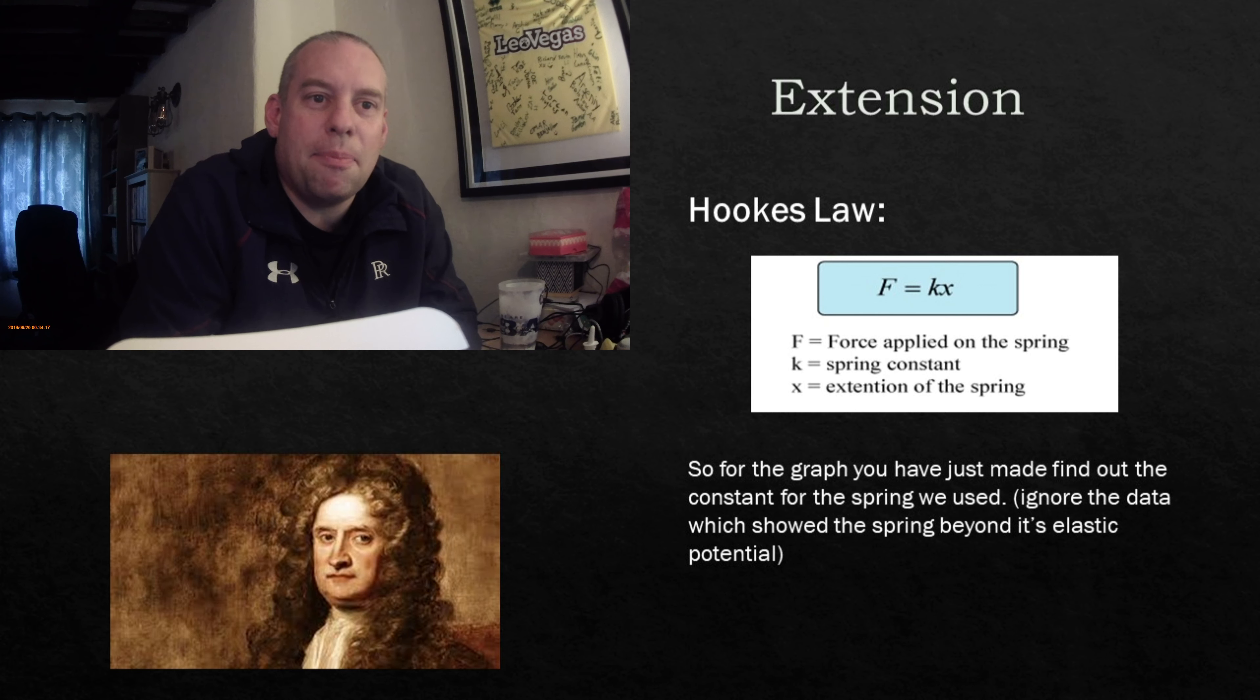Now the spring constant is going to be the same for every spring, as long as it doesn't reach its elastic limit. So what I want you to do with the graph that you've plotted, ignoring the parts where we have gone beyond the elastic limit, I would like you to rearrange the equation to find out the value of K. Once you've found the value of K, that will remain the same for all of the data points. So for one newton, two newtons, three newtons, four newtons, K will be the same for each one. It remains constant. And that'll be the same for any spring of that design and material. Each spring has its own constant, and that constant will remain the same until it breaks its elastic limit. And that is the nature of Hooke's Law.